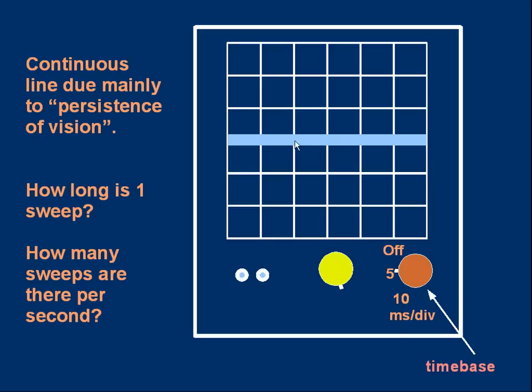Now your eye can't follow the spot if it's moving really fast. And the line appears as a continuous one rather than a moving spot. And that continuous line is due mainly to what's called persistence of vision, the way your eye and brain works. If the spot's moving very fast across the screen, the eye just sees a continuous line.